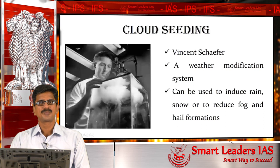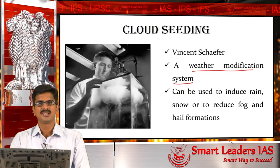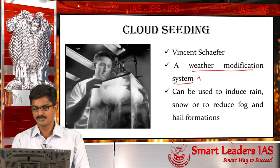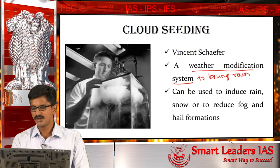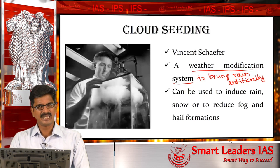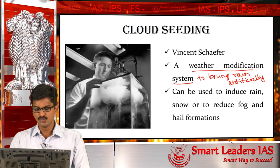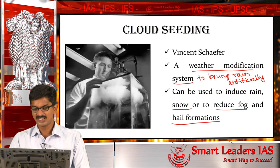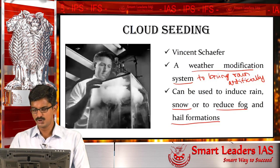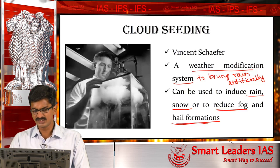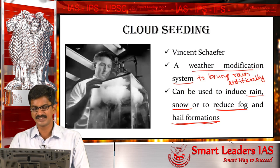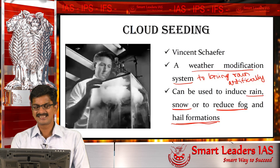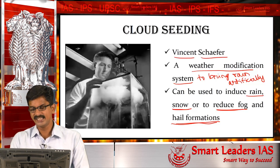Cloud seeding is a weather modification system to bring rain artificially. In addition to bringing rain artificially, the technology can be used to bring snow, as well as to reduce fog and hail formations. So cloud seeding can be used for four different purposes: to induce rain formation, to induce snow formation, to reduce foggy conditions, and to reduce hail formations over a particular region. This technology was accidentally discovered by Mr. Vincent Schaffer in the year 1946.